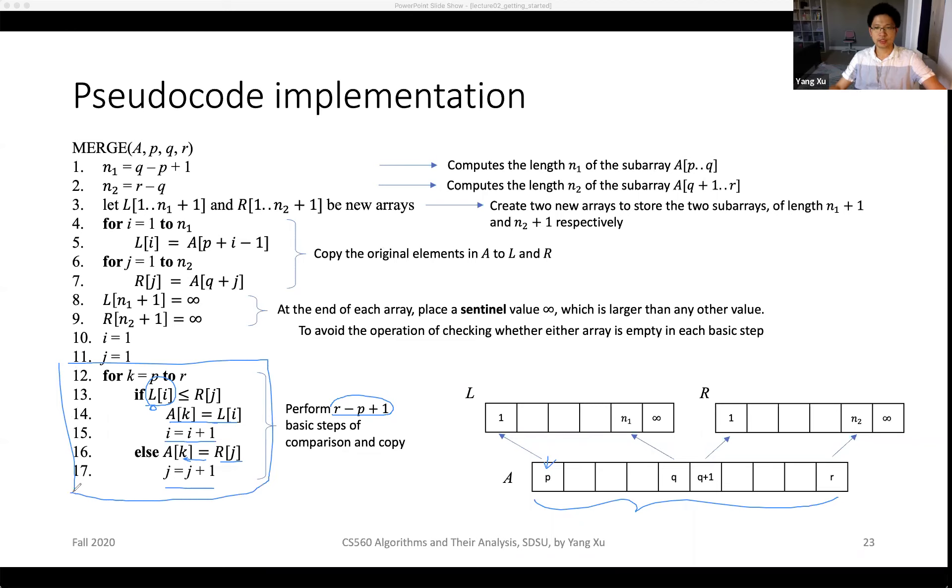Basically with the setup of the infinity sentinel value at the last position of the two piles, we don't need to use additional if-else conditions to check whether L or R is empty. That's the pseudocode implementation of the algorithm.